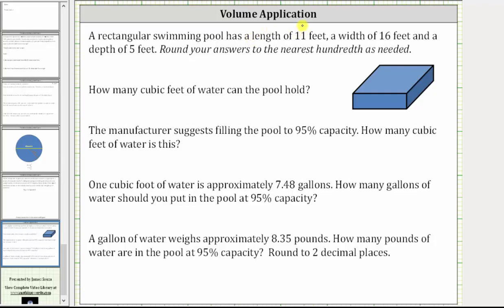A rectangular swimming pool has a length of 11 feet, a width of 16 feet, and a depth of five feet. How many cubic feet of water can the pool hold? To begin, a swimming pool is a large box or right rectangular prism, and therefore the volume is equal to the length times the width times the height.